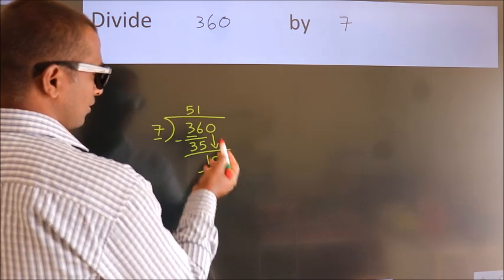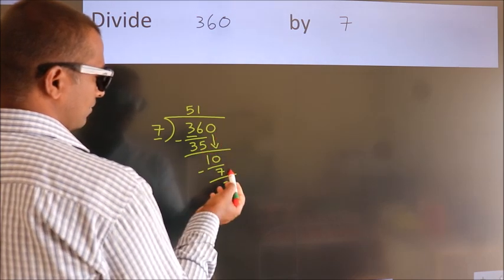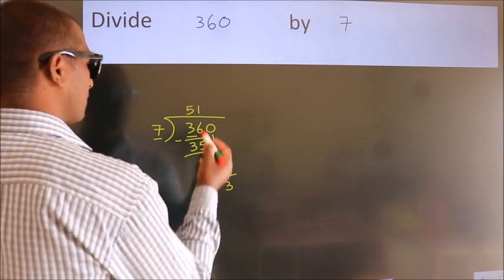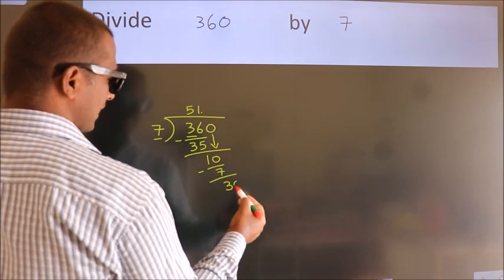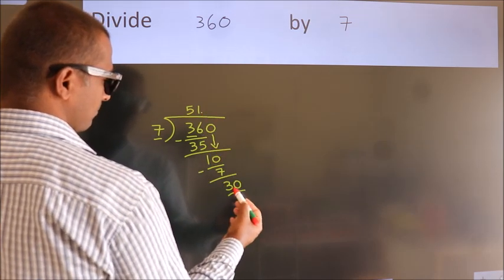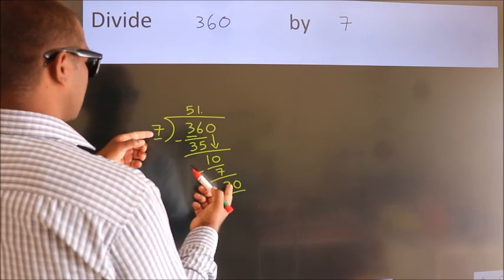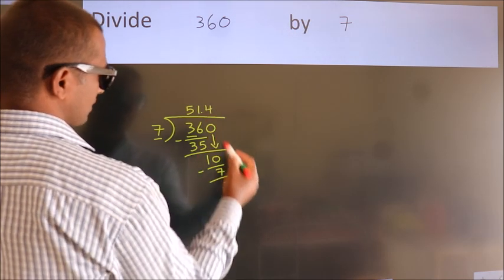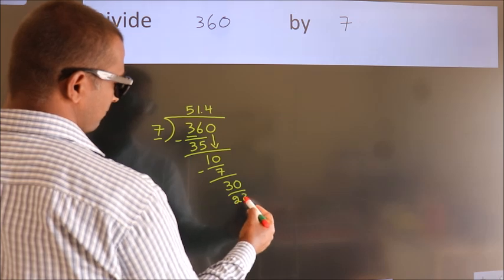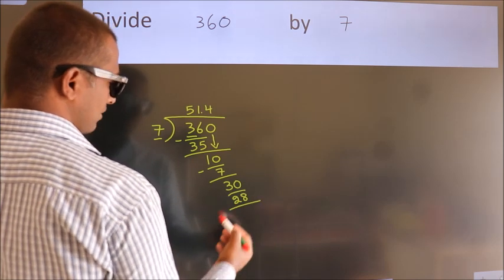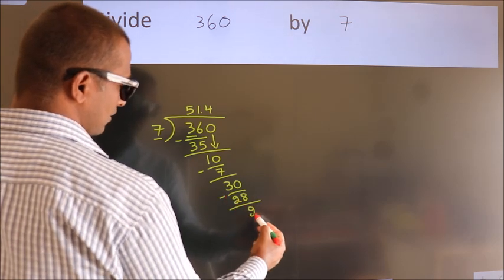After this, no more numbers to bring down. So, what we do is we put dot, take 0. So, 30. A number close to 30 in 7 table is 7 fives 28. Now, we subtract. We get 2.